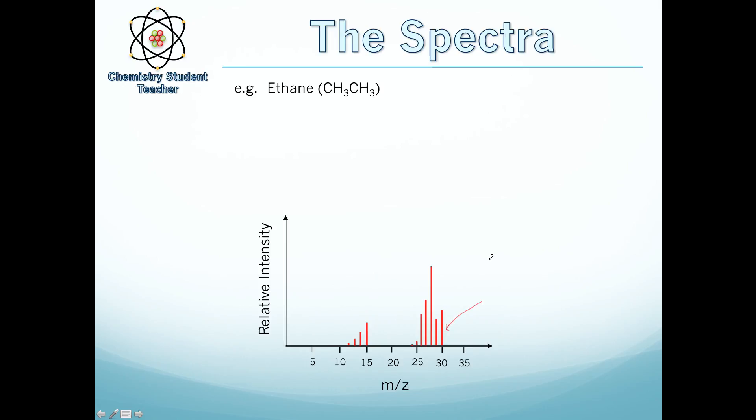And if we think about the molecular mass of ethane, it's 12 plus 12 is 24, plus 3, plus 3, which is 6. So we've got an MR of 30.